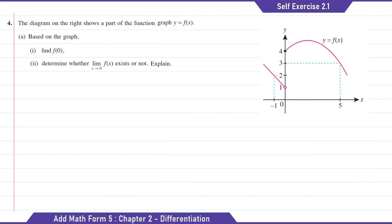Question 4: the diagram on the right shows a part of the function graph y equal to f of x. Part A: based on the graph, find f of 0. So here when x equal to 0, the answer will be the y-intercept. For the empty dot, there is no value for x equal to 0. But for the solid dot, the answer is equal to 4. Therefore, the answer for question 1 will be 4.